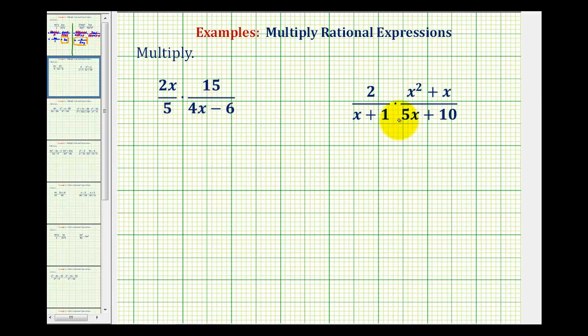We want to multiply the given rational expressions, but before we multiply, we do want to simplify out all the common factors between the numerators and denominators.